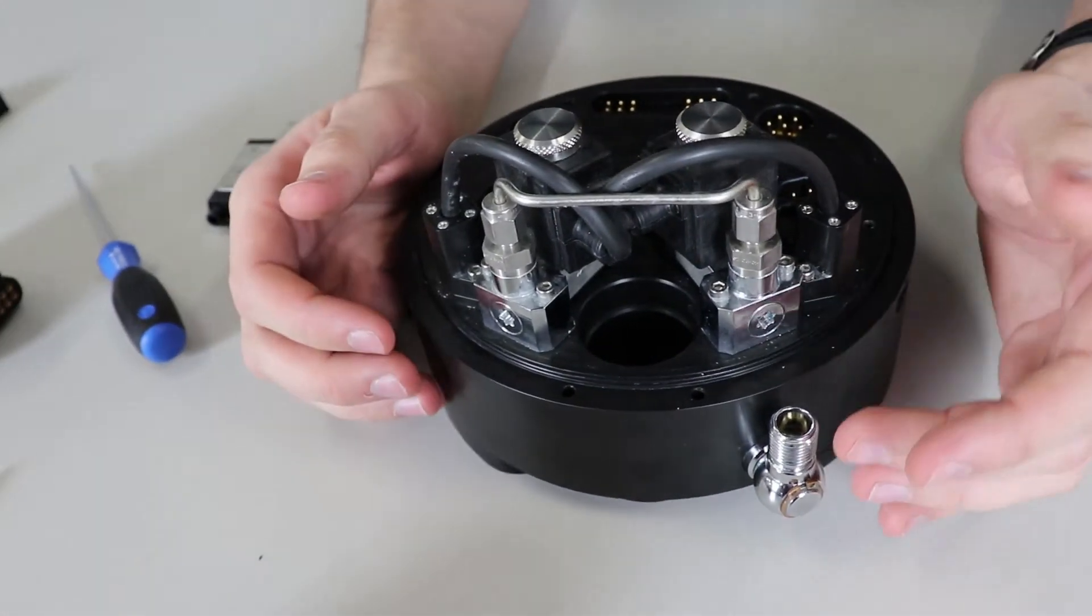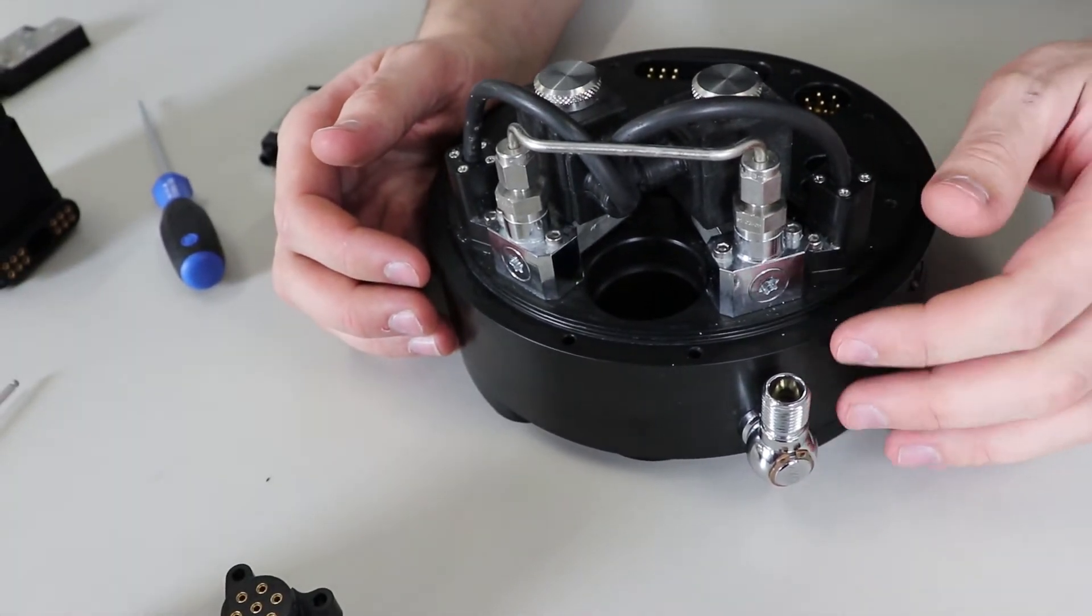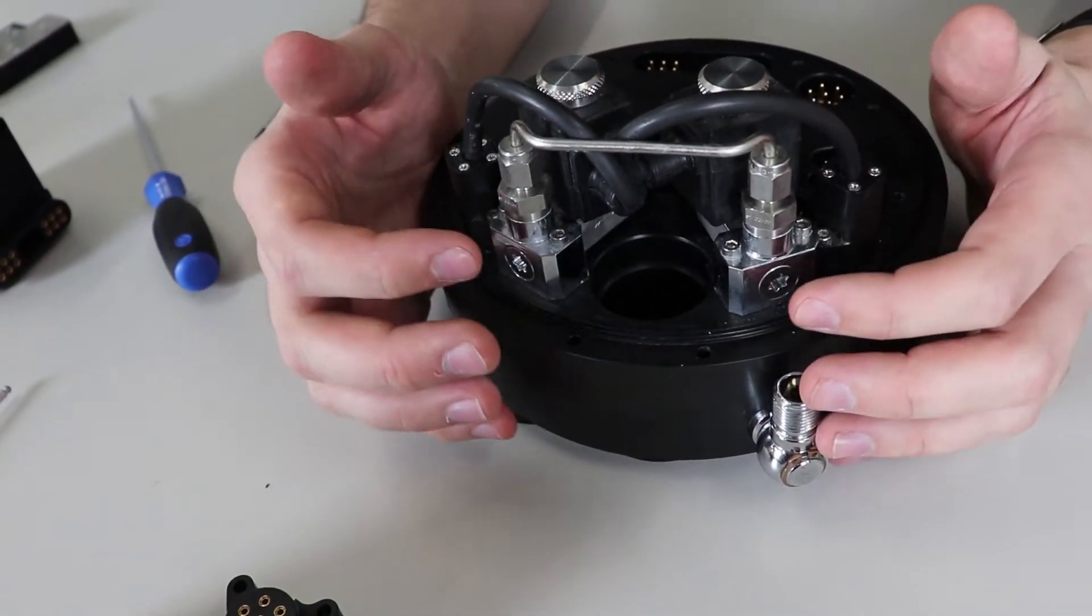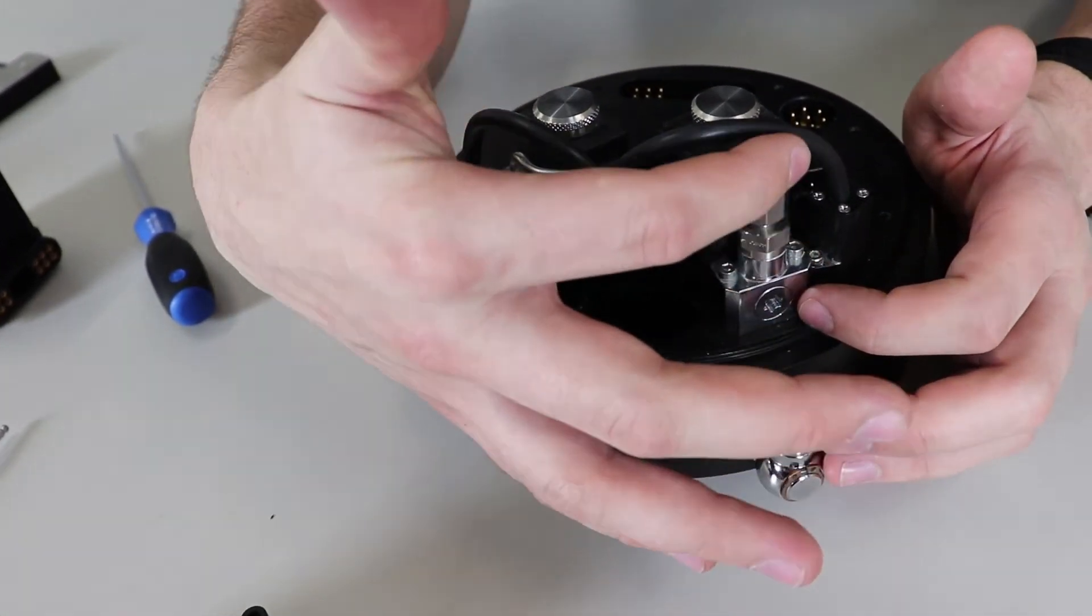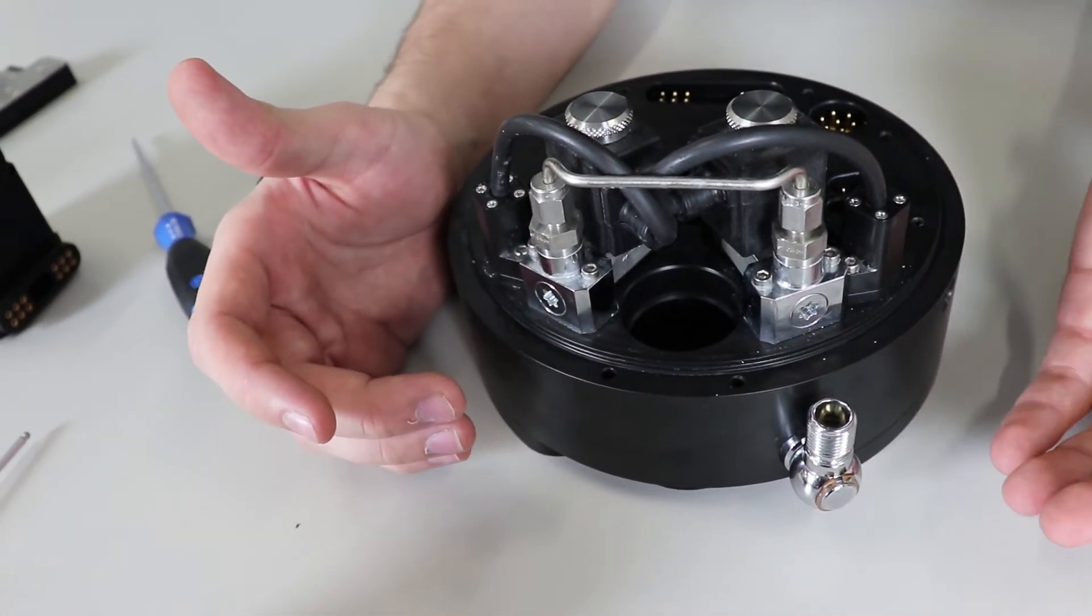And finally we have an oxygen inlet. This is the oxygen banjo which allows oxygen to flow to both solenoids, supplying them with oxygen. These solenoids are connected through a bridge, and therefore we only have one inlet. We don't need two.